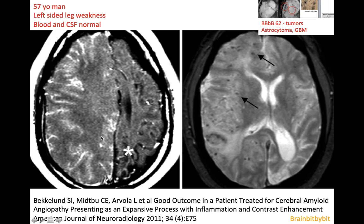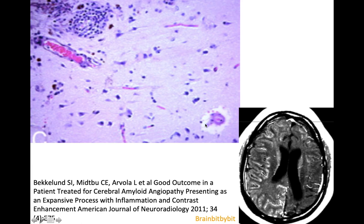This is a 57-year-old man with extensive abnormalities in his right hemisphere and motor symptoms. You might even consider a tumor, but the microbleeds on the SWI are telling. A biopsy showed edema surrounding the vessels, amyloid in the vessel wall, and white blood cells and macrophages surrounding the vessels — confirming ABRA. He responded very well to steroids, with both clinical and MRI improvement.